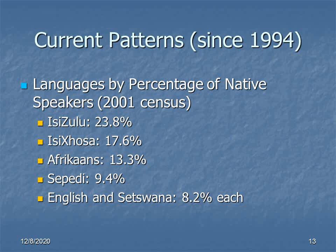There is no majority language in South Africa. The most commonly spoken first language is Isi Zulu at 23.8% of the population. Next up is Isi Xhosa with 17.6% of the population. Only in the third position do we have a colonizer or European language — Afrikaans — at 13.3% of the population. Sepedi then comes in at 9.4%, and finally, tying for fifth spot with 8.2% each, we have English and Setswana.